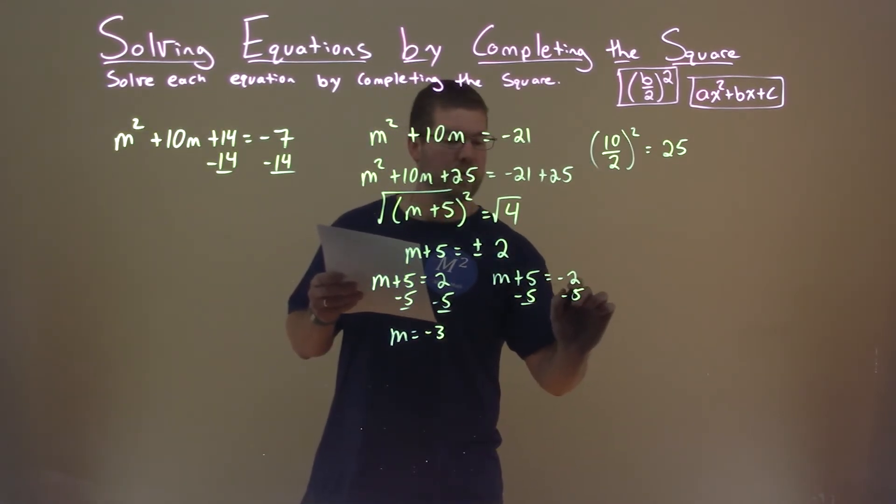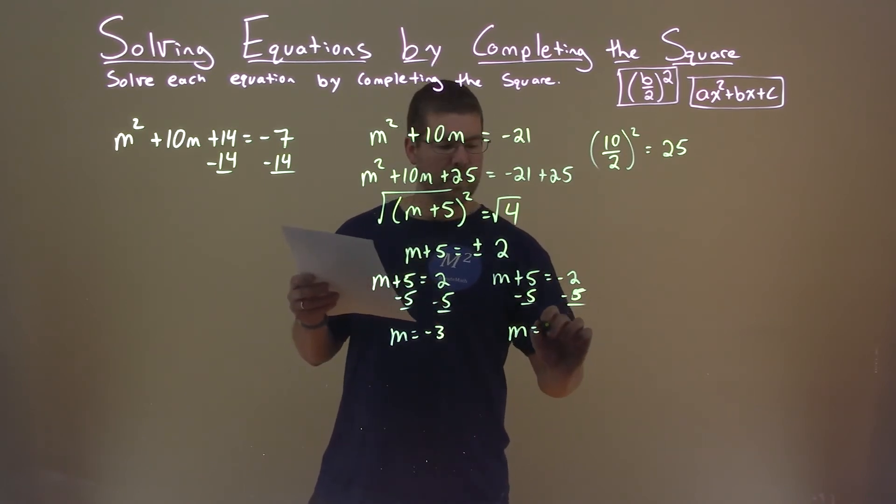Subtract 5 from both sides—that's a 5 right here—and we have m equals negative 2 minus 5, which is negative 7.